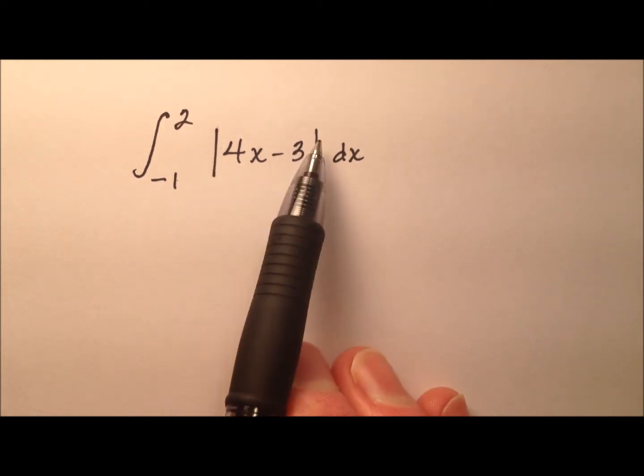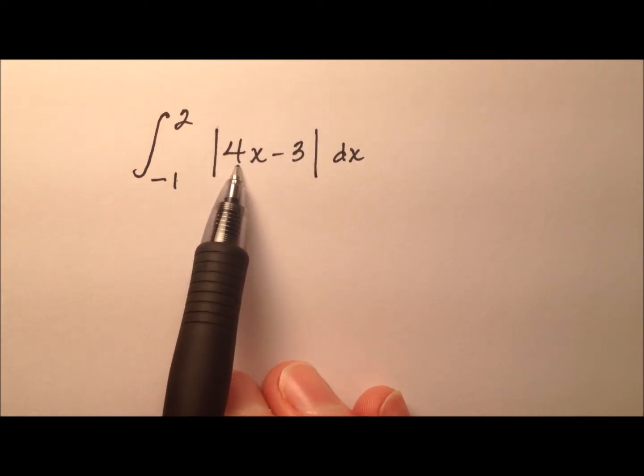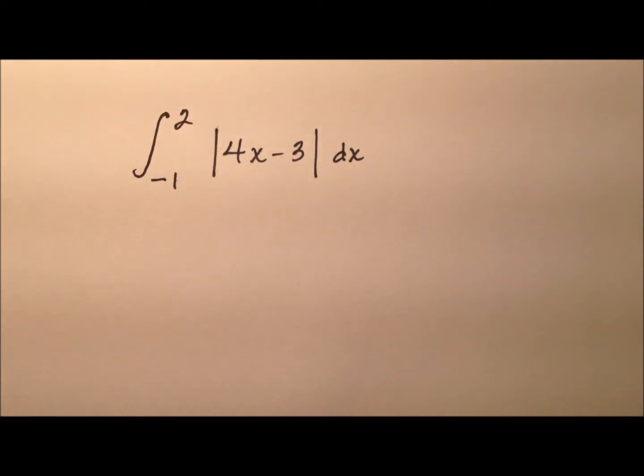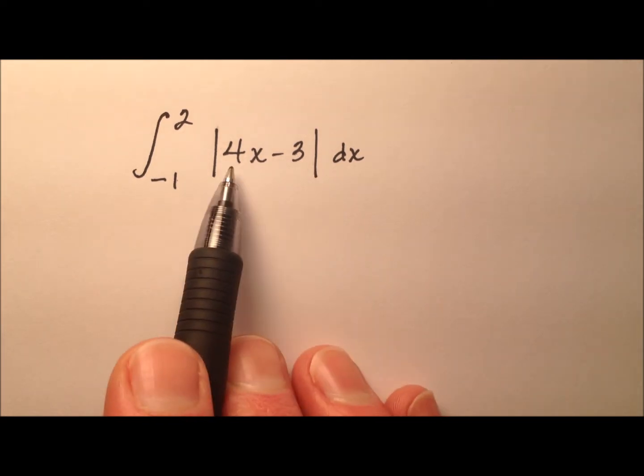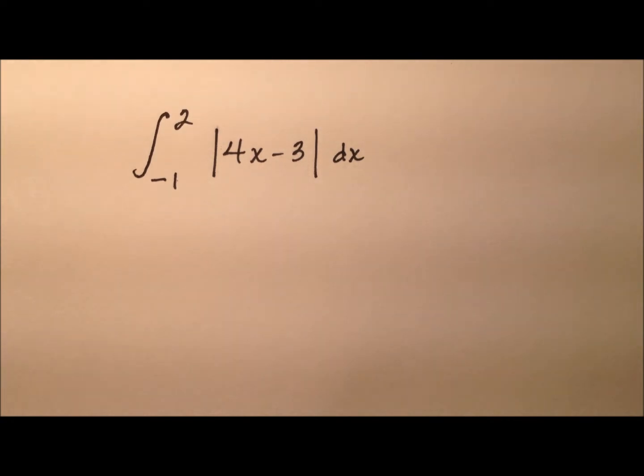What does the absolute value bars do to the graph like this? Well, it takes the portion of the line that's below the x-axis, or that's negative, and it's going to reflect that up over the x-axis, so it's going to ultimately end up being positive. And that's why you see those graphs of absolute value functions that have linear functions inside are actually v-shaped graphs, because that portion of the line that was negative got reflected up over that x-axis.